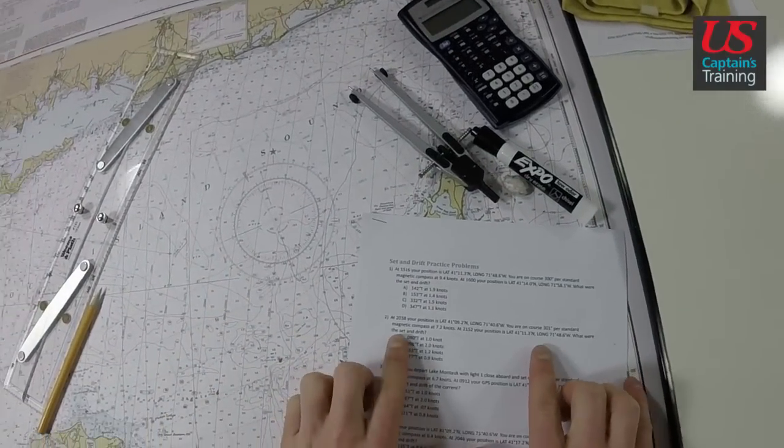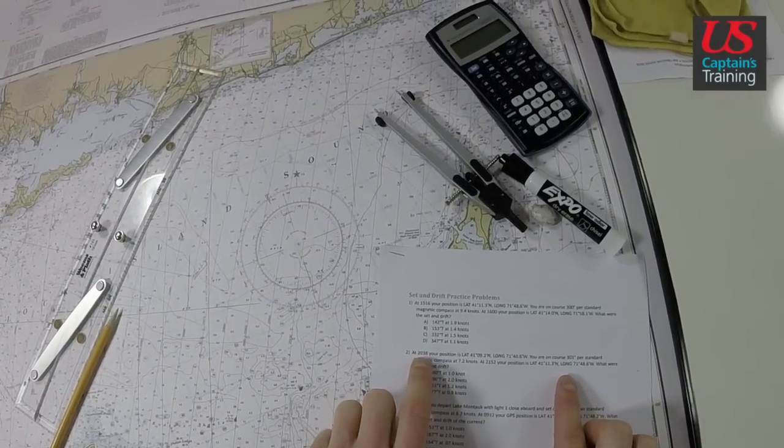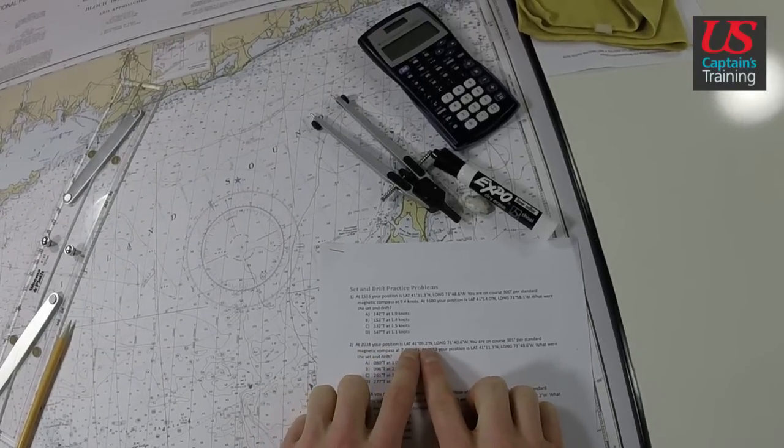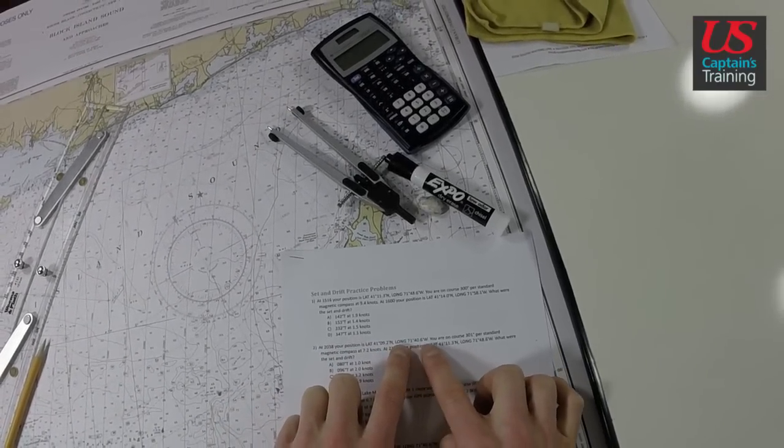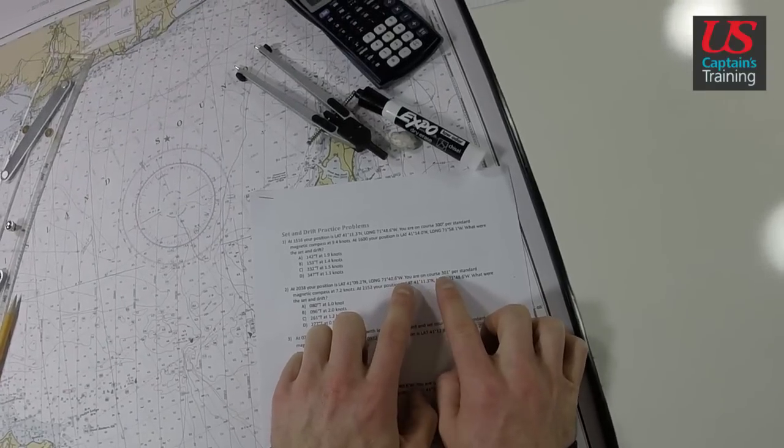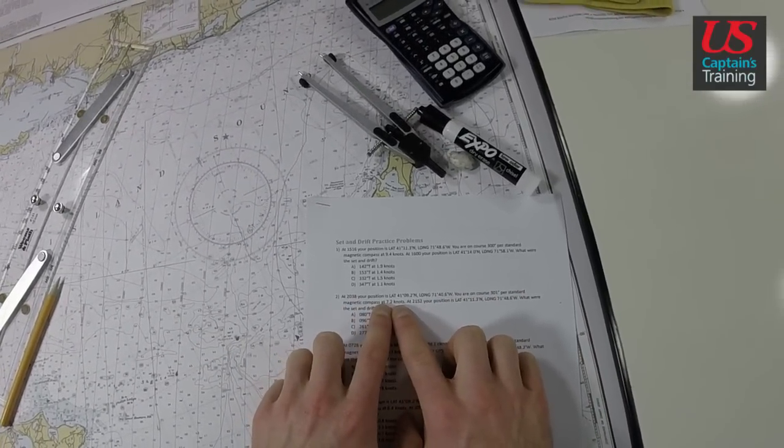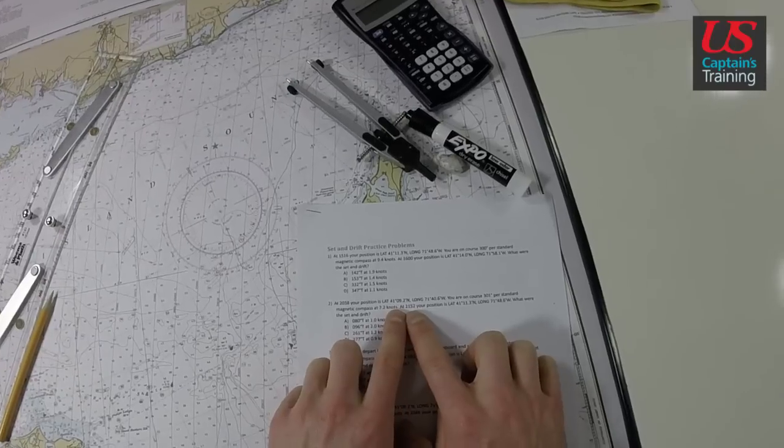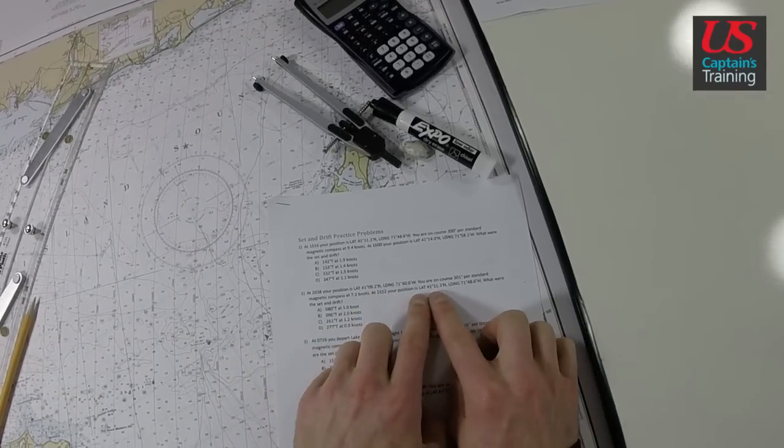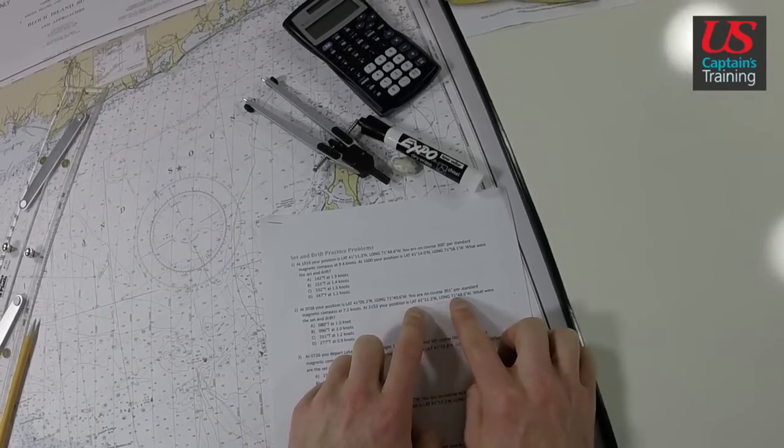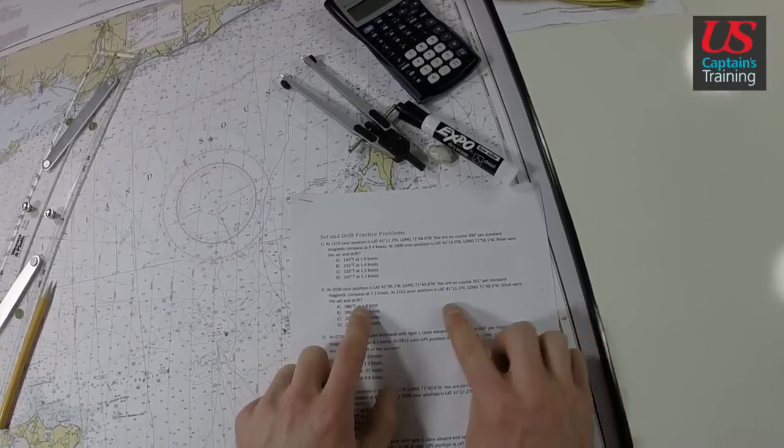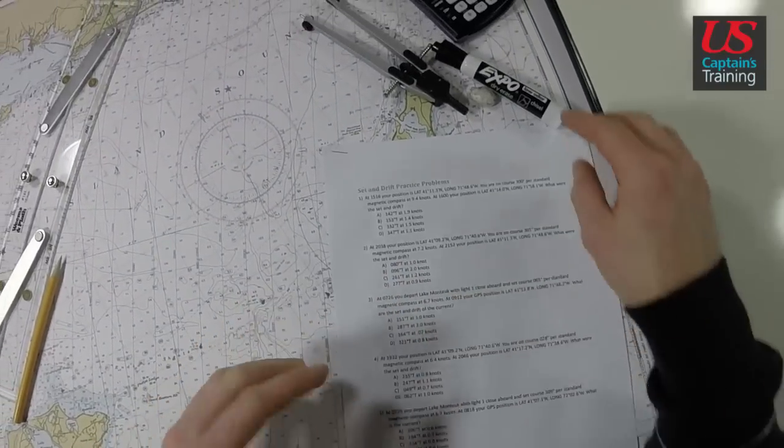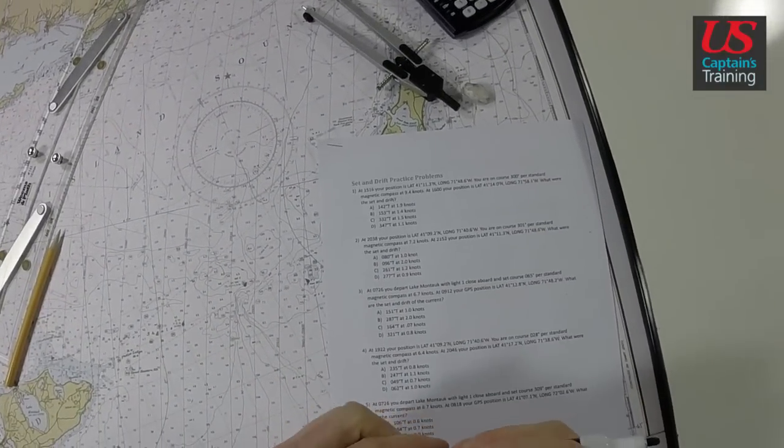So here we go. The problem reads, at 2038 your position is 41°09.2', longitude 71°40.6'. You are on course 301 per standard magnetic compass at 7.2 knots. At 2152 your position is latitude 41°11.3', longitude 71°48.6'. What were the set and drift?